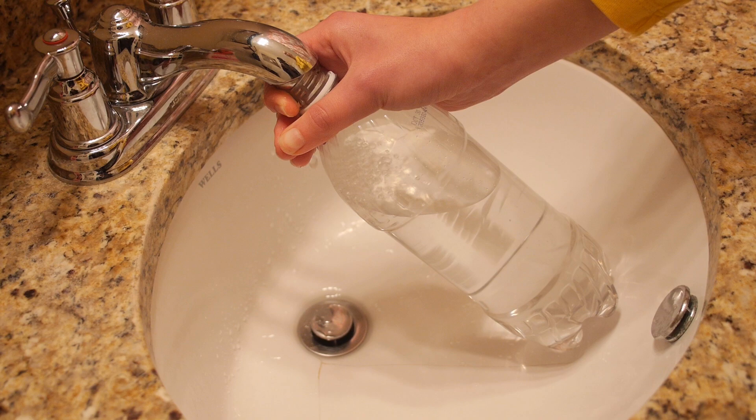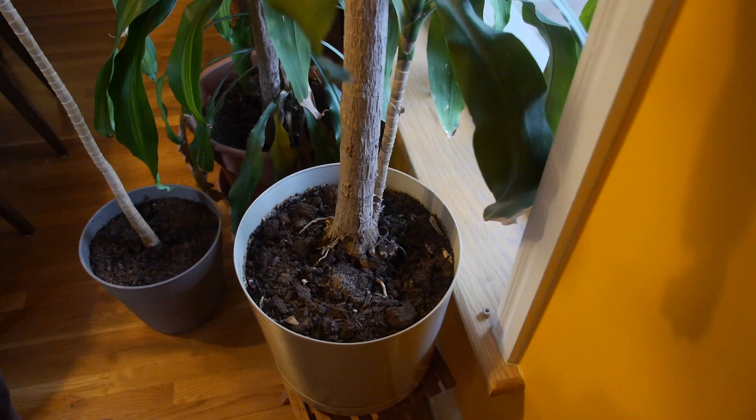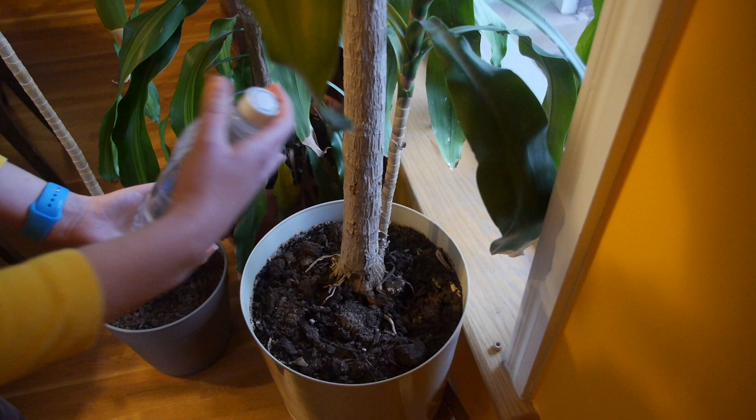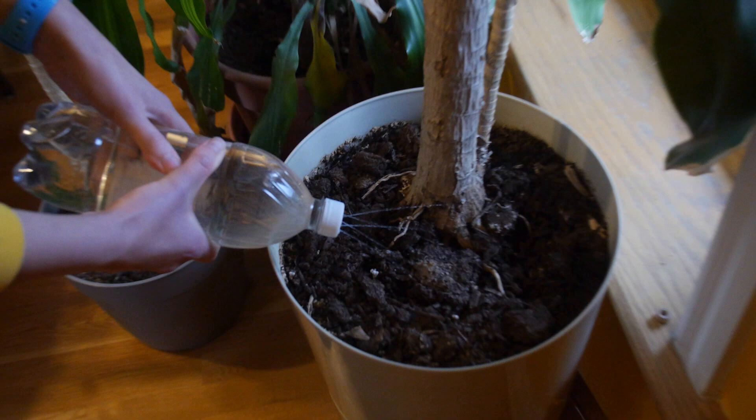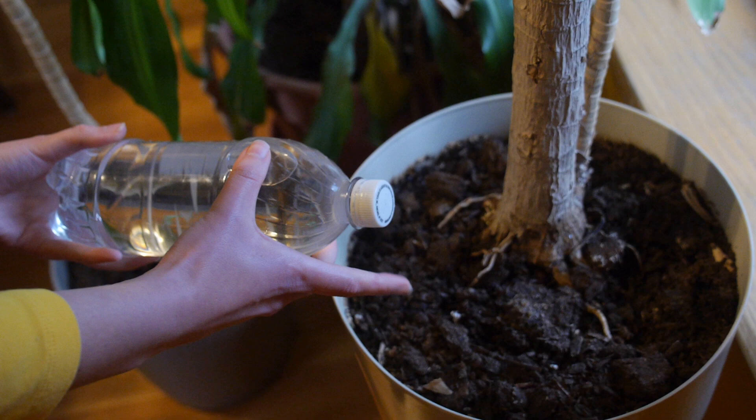Now that we've filled our bottle with water, we can go ahead and put it in our plant. It's good to just give it a check to make sure that your holes actually went all the way through. Then what you want to do is bury it into the soil somewhere where it's not going to affect the roots of your plants.